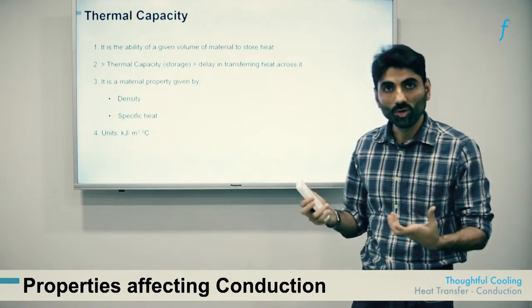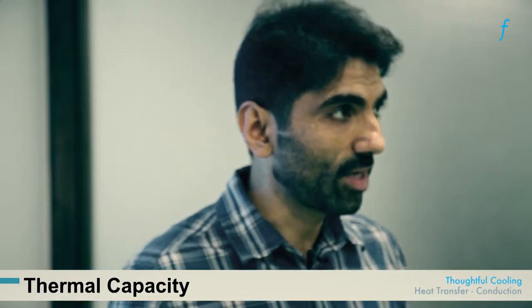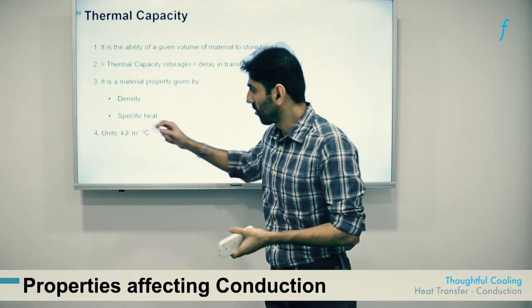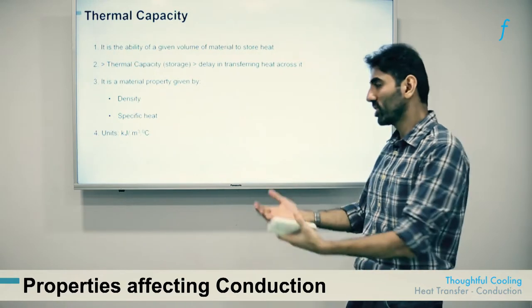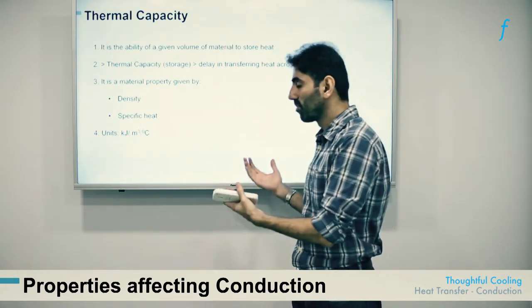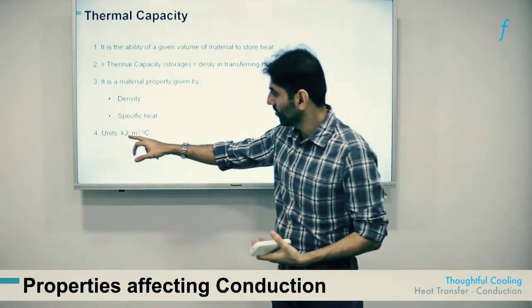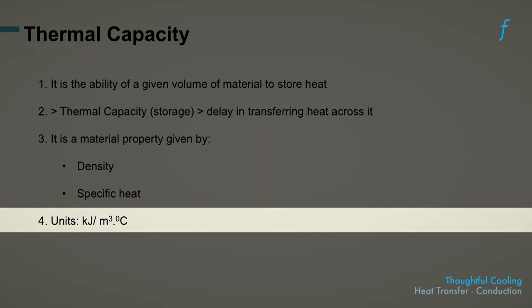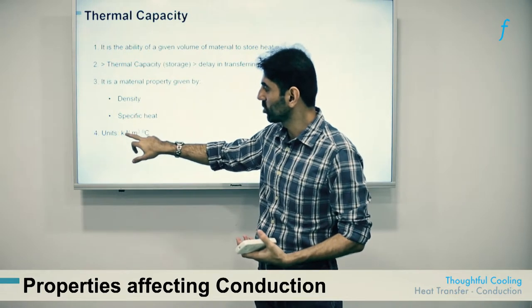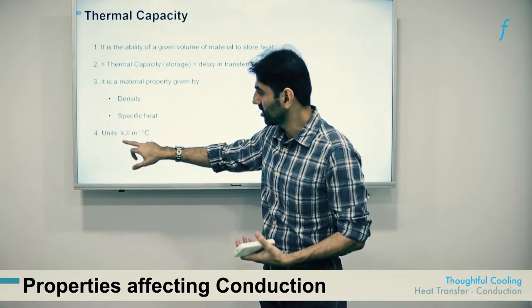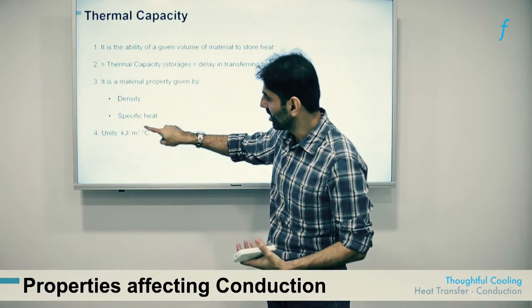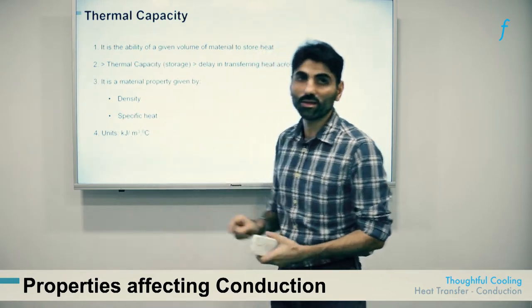Specific heat is also a contributor to thermal capacity. It is defined as the amount of heat that needs to be applied to an object to raise its temperature by one degree. The higher the specific heat, the more the material will be able to store heat for a longer period of time, thereby shielding the other side of the building from heat. The units for thermal capacity are kilojoules per meter cube degree centigrade — the higher the density and specific heat, the greater the thermal capacity.